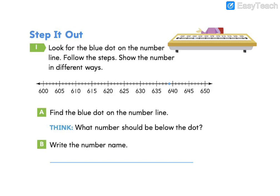Let's look at the first problem on page 131. Number 1. Look for the blue dot on the number line. Follow the steps. Show the number in different ways. Letter A says, find the blue dot on the number line. There it is. What number should be below the blue dot?